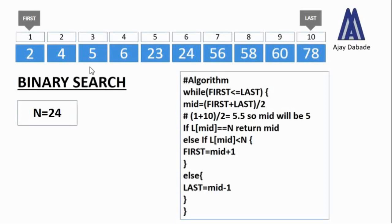For better understanding, there is an algorithm in front of you by which I will explain how it works, and after this we will implement the entire program in Python using a recursive function. Let us first understand how binary search works. The number we are searching for is 24. One mandatory condition in binary search is that the numbers in the list must be in either ascending or descending order — otherwise binary search will not work. As you can see, the list in front of you is in ascending order.